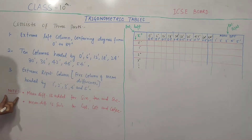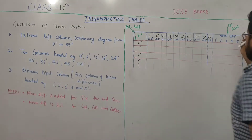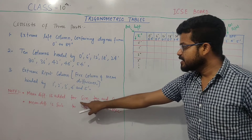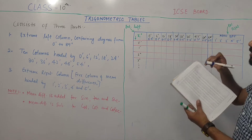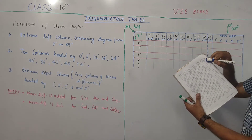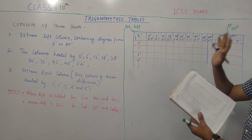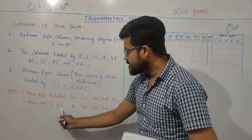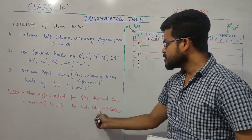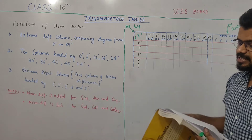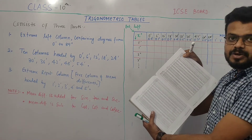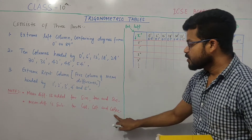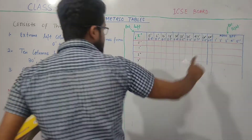Note: the mean difference is added for sine and tan. When you look at the sine table, it is mentioned 'add' — you have to add this value. And the mean difference is subtracted for cos, cot, and cosec. After the sine table, there is a cos table where it is written 'subtract', so for cos, cot, and cosec, you have to subtract the mean difference.